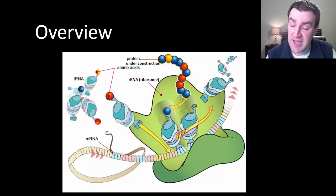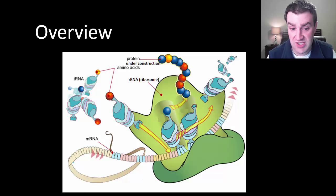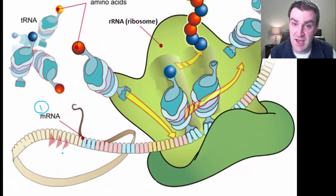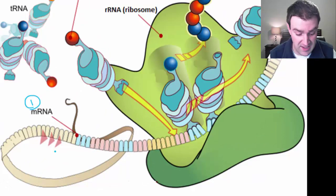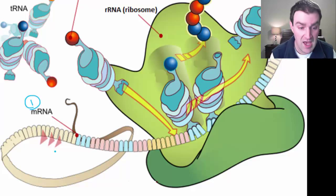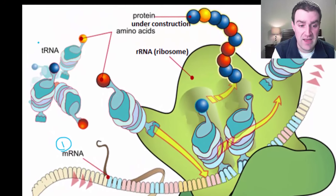If we zoom in on all the players in translation, we'll see that there are three different RNAs that all play a role and we'll talk about their roles in turn. mRNA we'll talk about first — the same messenger RNA that came from the nucleus in the first step of transcription, and it's the only nucleic acid that's involved in both steps. We'll also see that there's tRNA.